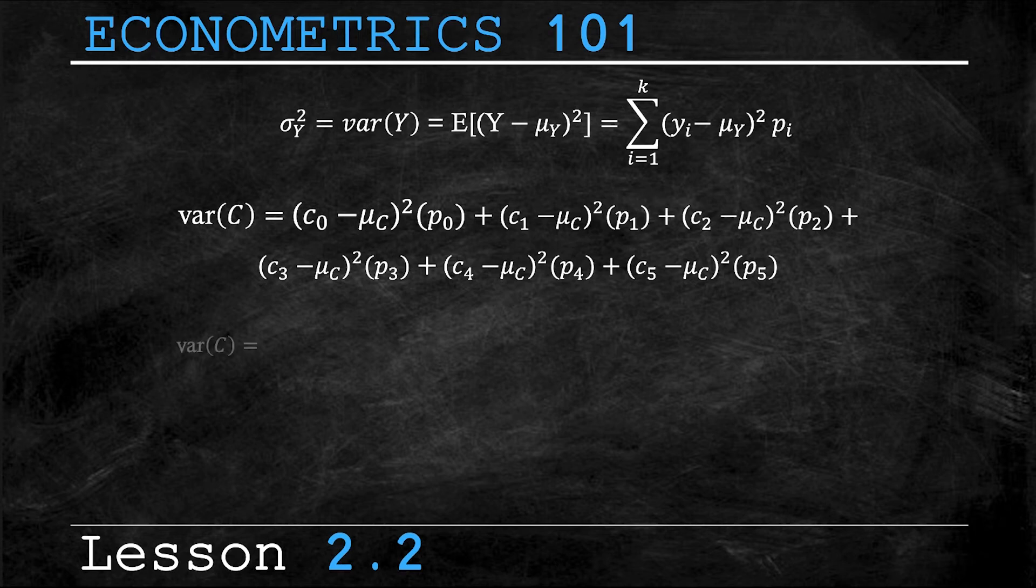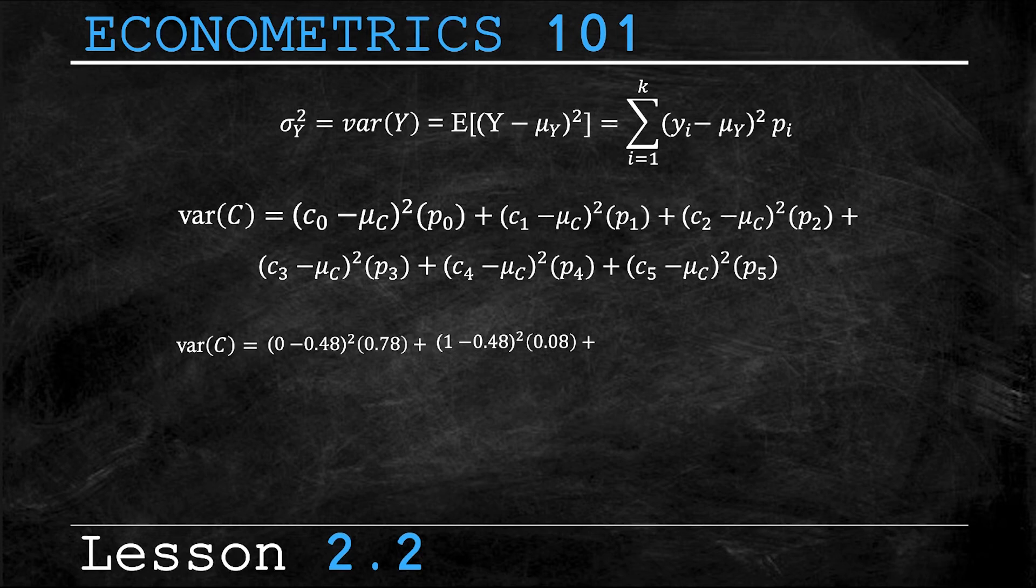So here I have that the variance of c is equal to the first outcome, which is zero crashes, minus μ_c, which is the mean we calculated earlier to be 0.48, all of that squared times the probability of zero crashes, which is 0.78. We add that to the next outcome, which is one minus the mean, which is the same as before 0.48, all squared times the probability of one crash, which is 0.08. We add that to the following outcome, which is two crashes minus the mean, which is you guessed it 0.48, all squared times the probability of two crashes, which is 0.06.